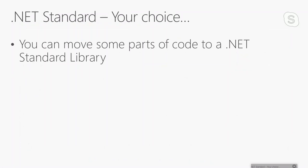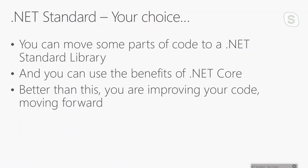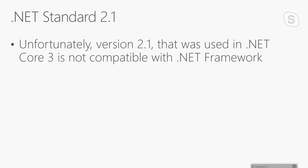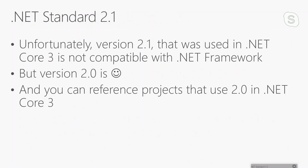Your choice is .NET Standard because you can move some parts of your code — for example, a business logic layer — to a standard library, and use it across both frameworks. Choosing this approach, you can use the benefits of .NET Core in your legacy application. Note that .NET Standard 2.1 is present in .NET Core 3 but is not compatible with .NET Framework; however, version 2.0 is compatible. You can reference projects created with .NET Standard 2.0 in both .NET Core 3 and .NET Framework.